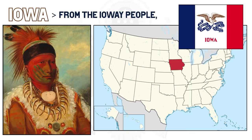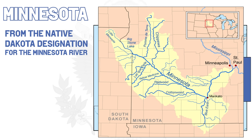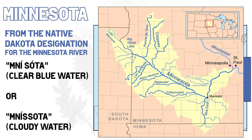Moving on to Iowa: Iowa derives its name from the Iowa people, one of the many Native American nations whose territory was within the future state at the time of European colonization. Minnesota comes from the Native Dakota designation for the Minnesota River, which got its name from one of two words in Dakota: Mni-sota, meaning 'clear blue water,' or Mni-sota, meaning 'cloudy water.'